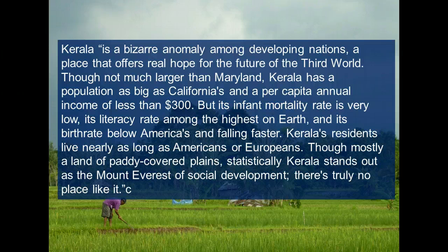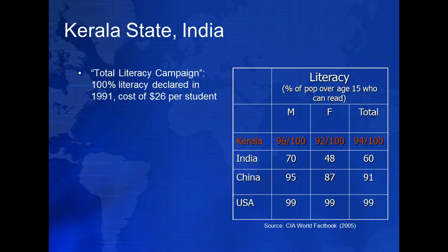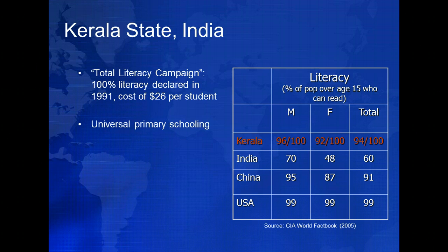Kerala boasts a high level of human development. It has near universal rates of literacy, with a much smaller gap between men and women than exists elsewhere in India. This achievement in literacy was accomplished at relatively low cost. In 1991, the government introduced a total literacy campaign and declared universal literacy its goal. Since then, it has managed to increase the official literacy rate from 90% to 94%. Kerala has also sought to ensure universal access to education. Since 2007, the government has reported a 100% attendance rate for children of primary school age. This is facilitated by the fact that 99% of the population lives within 2 kilometers of a primary school.